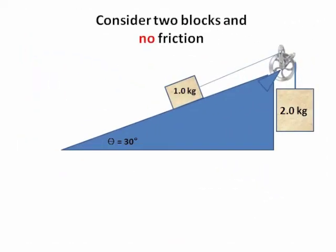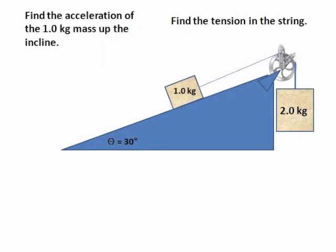All right, let's consider two blocks and no friction. Sample question. We want to find the acceleration of the one kilogram mass up the incline and the tension in the string between the masses.